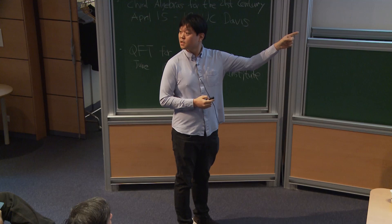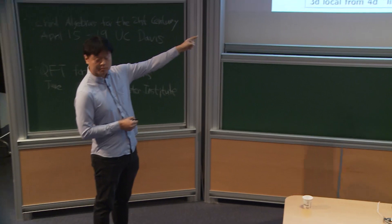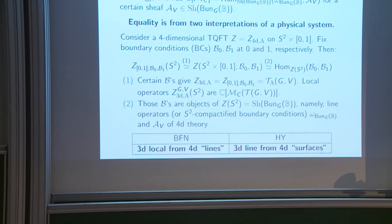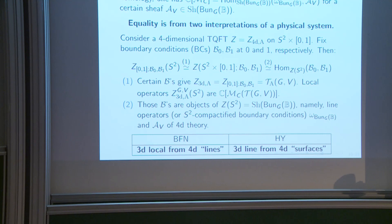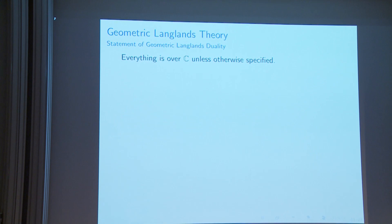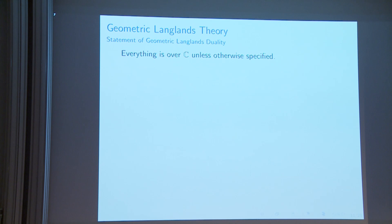This is the end of the third level introduction. We interpret the work of BFN by giving two different interpretations, and from that point of view you can do a bit more. Now let me start the introduction to geometric Langlands.